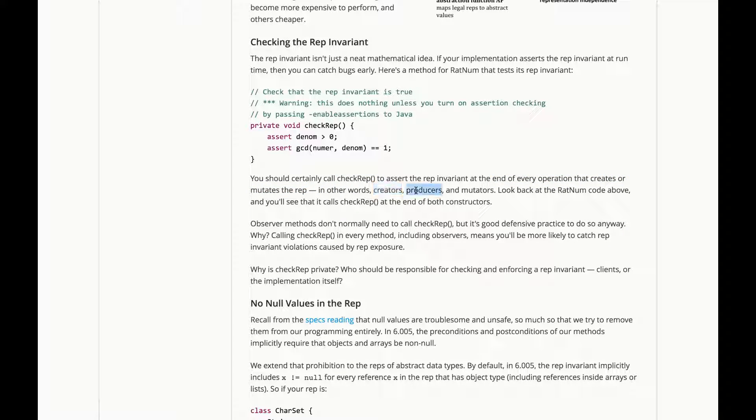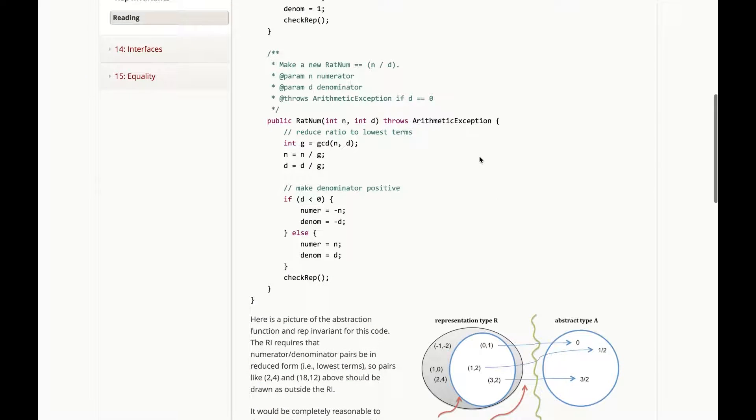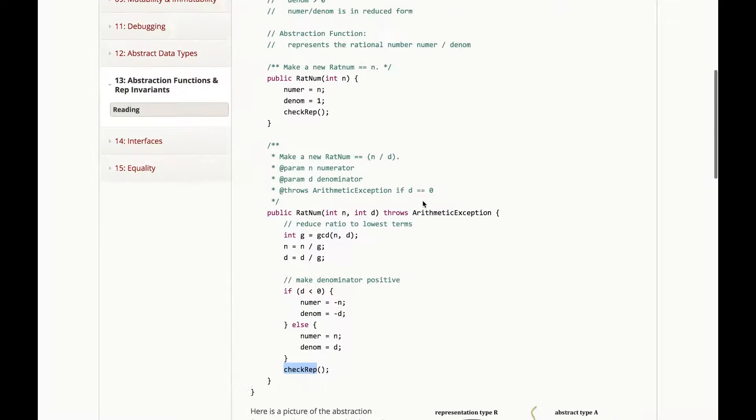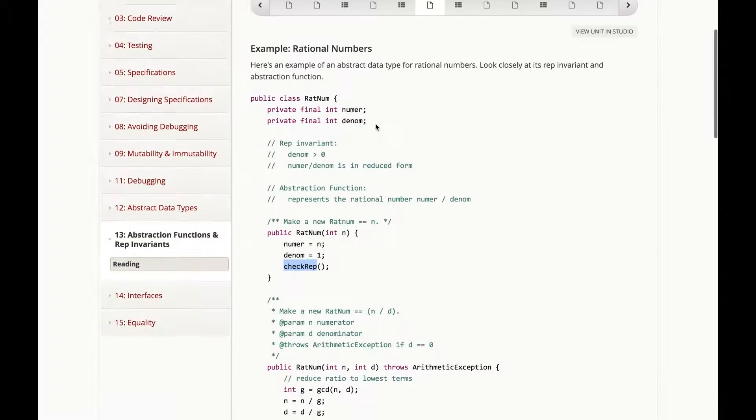In other words, creators, producers, and mutators. So if you look back at the RatNum code above, you will see that it calls CheckRep at the end of the constructor—each of the constructors. Those are both creators.